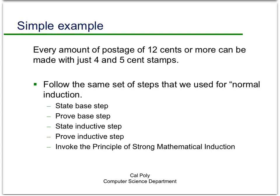Hopefully a simple example will make this clearer. Suppose I wanted to prove that every amount of postage of 12 cents or more can be made with just 4-cent and 5-cent stamps. We use the same steps as for normal induction, but the base step and inductive step will look a little different; otherwise we go through the same process.